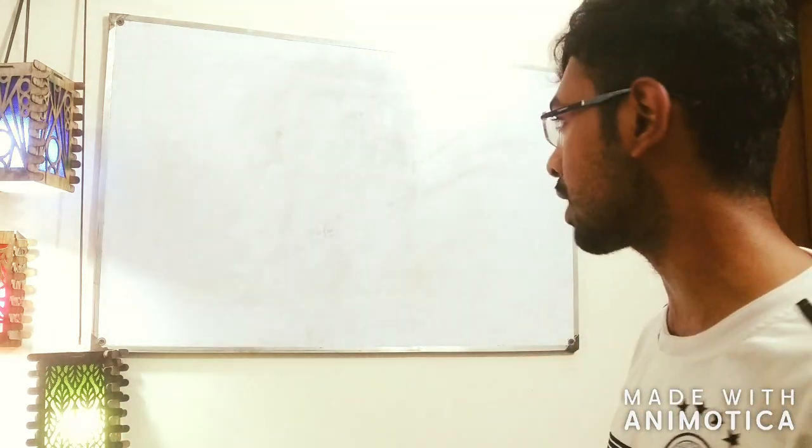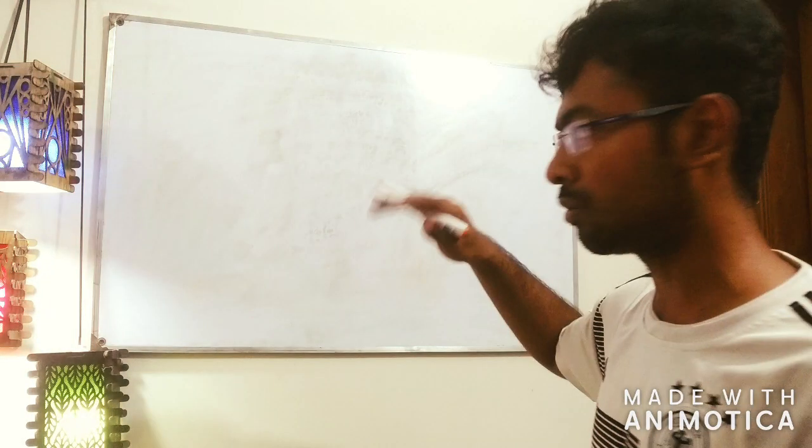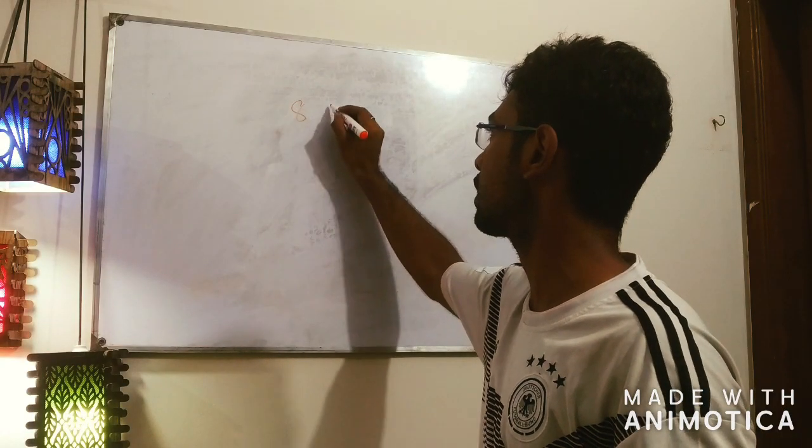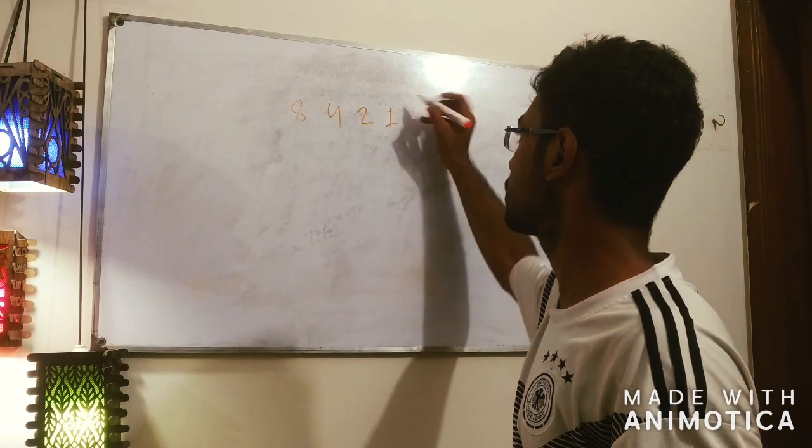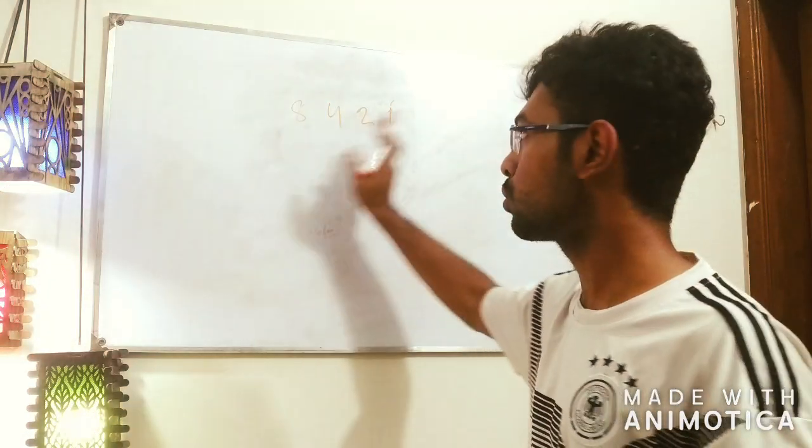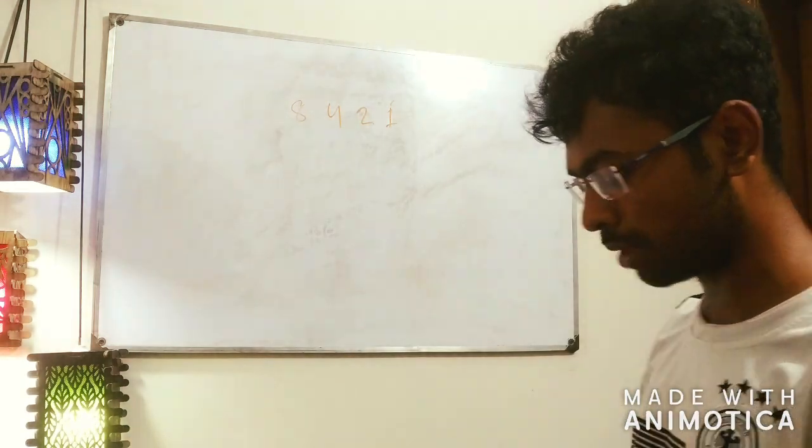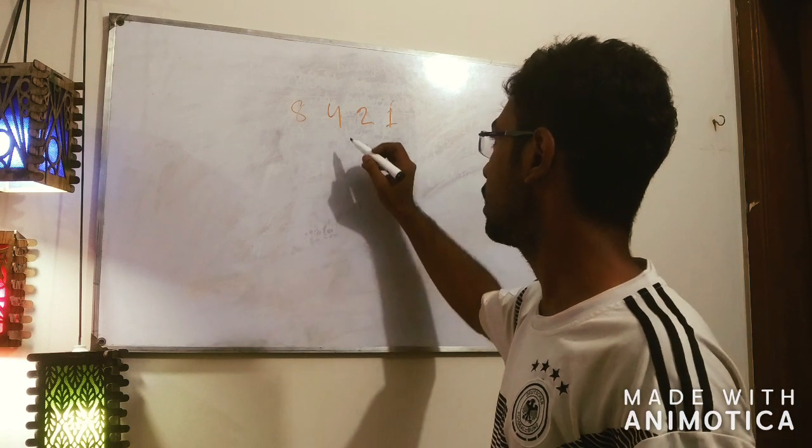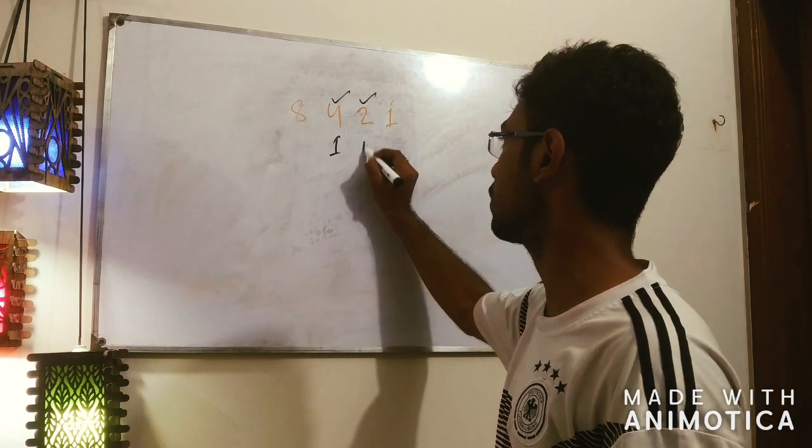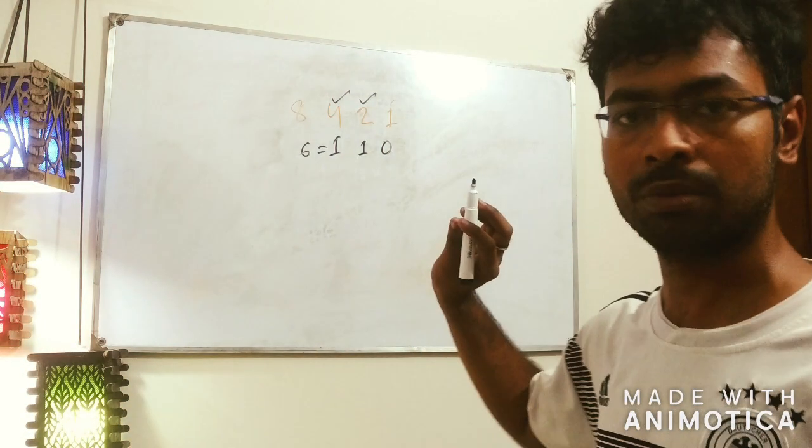This is a good technique that we have to do with the decimal. So, this is 8, 4, 2, 1. This is 2 to the power 2, 2 to the 3, 2 to the 4. And here we have the placement of binary.